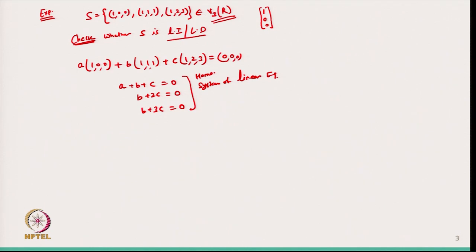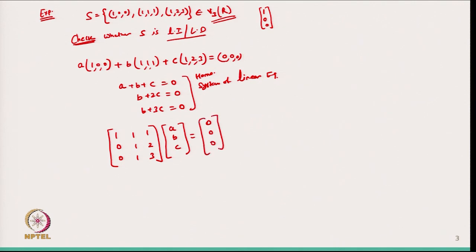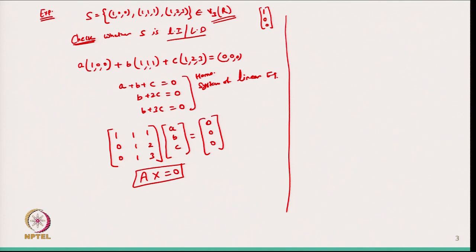This is a homogeneous system of linear equations. I can write it in matrix form with the vectors as columns: the matrix A = [[1,1,1],[0,1,2],[0,1,3]], with the scalar vector [A, B, C]^T equal to [0,0,0]^T. Now I convert this to echelon form using Gauss elimination to reduce it to upper triangular form.